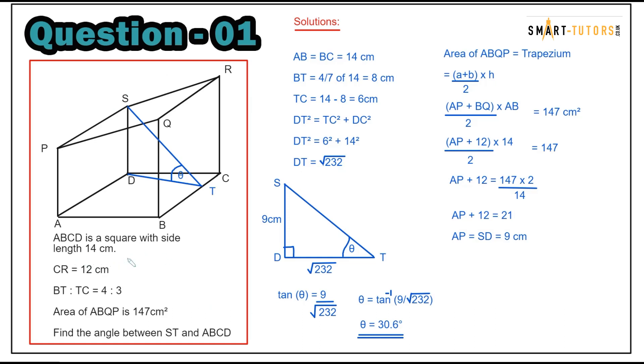The diagram is given: ABCD is a square with a side length of 14 centimeters, CR is given as 12 centimeters, the ratio BT to TC is 4 to 3, and area of ABQP is given as 147 square centimeters. Find the angle between ST and ABCD.